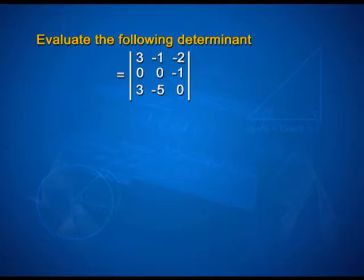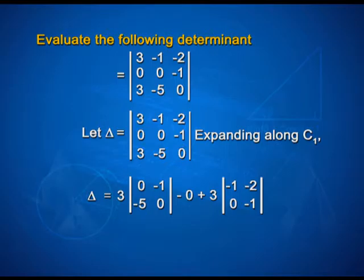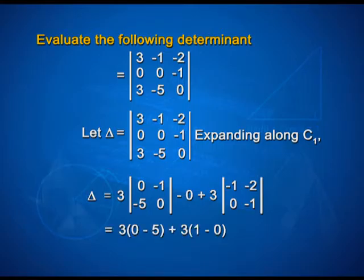Now let us evaluate one more determinant: [3, -1, -2; 0, 0, -1; 3, -5, 0]. Expanding along C1, we get: 3 * det[0, -1; -5, 0] - 0 + 3 * det[-1, -2; 0, -1]. This simplifies to 3*(0 - 5) + 3*(1 - 0) = 3*(-5) + 3*(1) = -15 + 3 = -12.